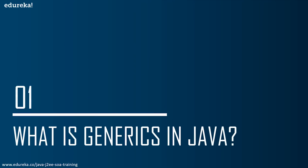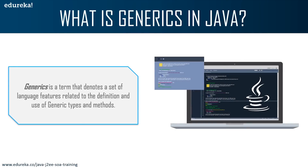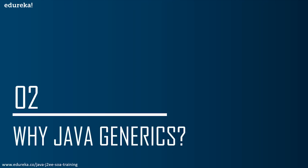Let's understand what generics in Java is. Generics is a term that denotes a set of language features related to the definition and use of generic types and methods. Java generic methods differ from regular data types and methods. Before generics, we used collections to store any type of objects — either generic or non-generic. Now, generics force the Java programmer to store a specific type of objects.